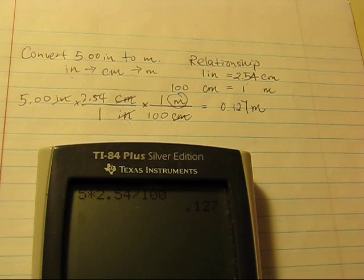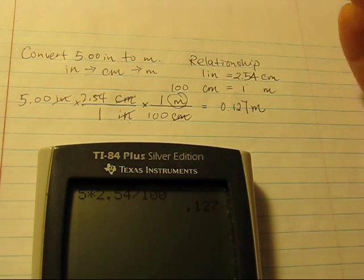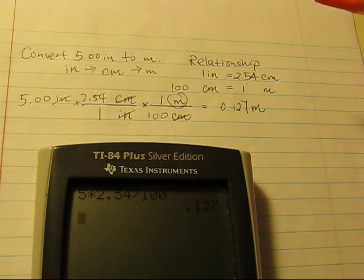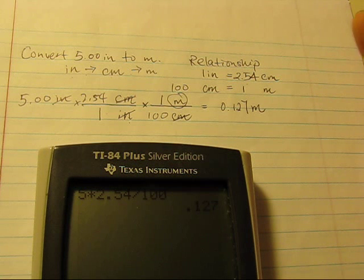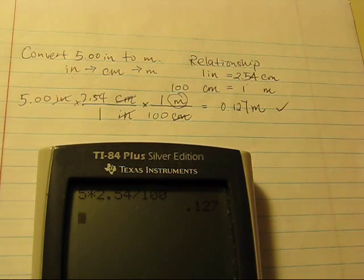After you have your answer, please check if it makes sense to you. From the previous example, we know that 5 inches is equal to 12.7 centimeters. And here we have 0.127, which is 12.7 centimeters. So it makes sense. That's the correct answer.